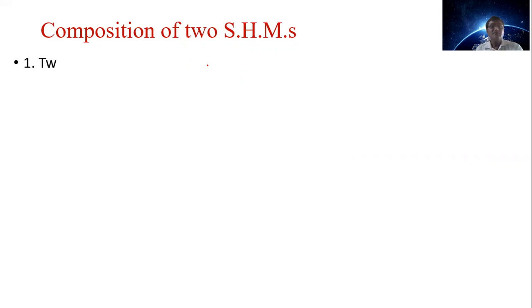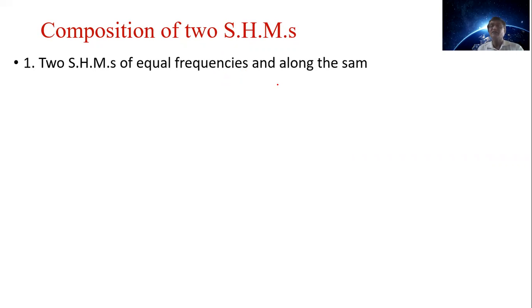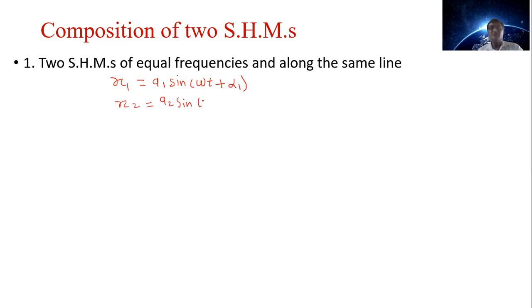Hello. Last time we have seen about the composition of two SHMs. The first case is two SHMs having the same frequency acting along the same line. These SHMs are described by the equations X1 is equal to A1 sin(omega t plus alpha 1) and X2 is equal to A2 sin(omega t plus alpha 2).